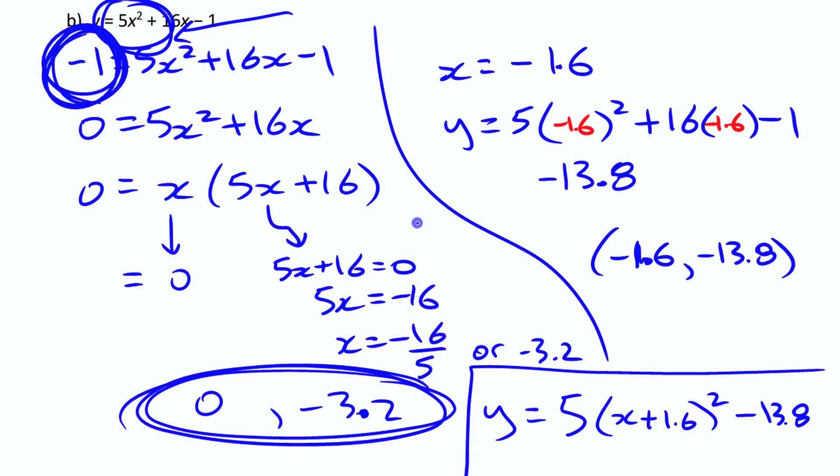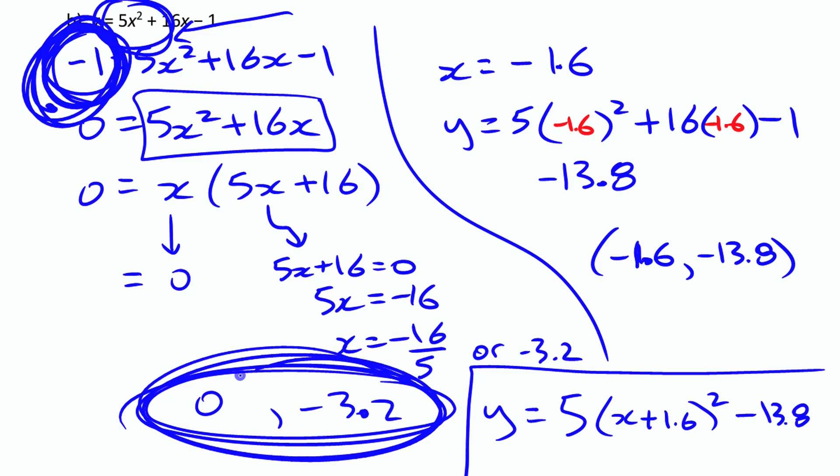Alright, so that is partial factoring. The idea of substituting in the y-intercept and it clears out the number on the other side. You're left with just the x-squared and the x-term. You factor it. You find two values. One is the y-intercept and one is the mirror image point of it. And finding the halfway point and using that to find the y-coordinate of the vertex. That's it.